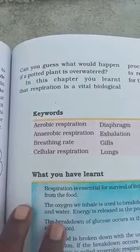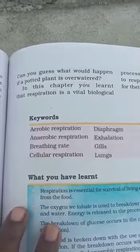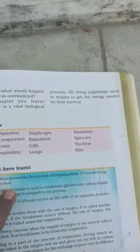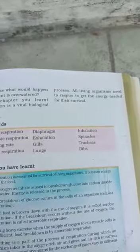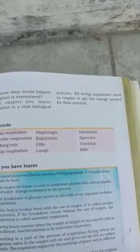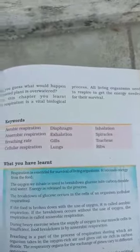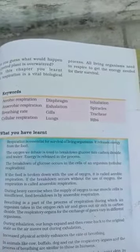In this chapter you learned that respiration is a vital biological process. All living organisms need to respire to get the energy needed for survival — both plants as well as animals. Energy is very important, and that energy comes from food material.